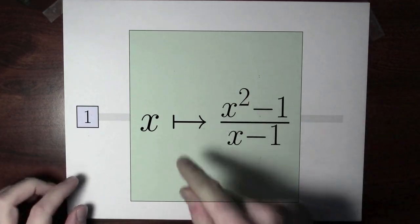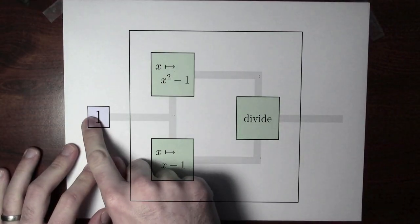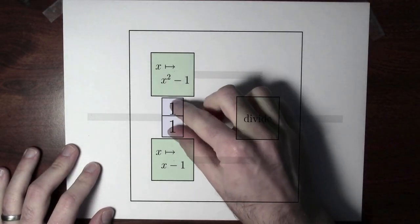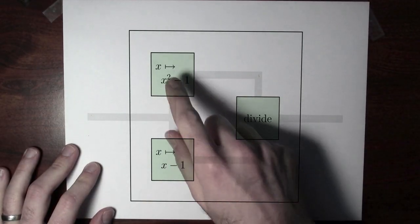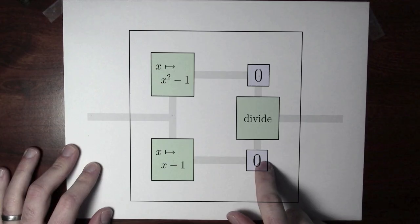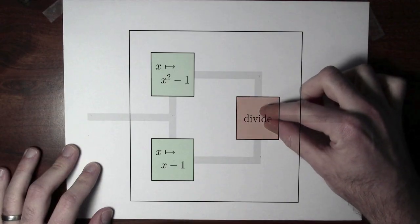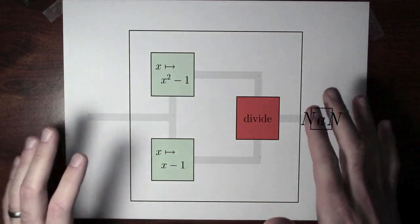I evaluated the function at 3, but who cares? Let's try to evaluate the function at 1 instead. What happens when we plug in the number 1 into this function? I'm going to open up this function and evaluate the numerator and denominator separately. I take this 1 and split it up, plugging it into the numerator and denominator. The numerator gives 1 squared minus 1, which is 0. And the denominator gives 1 minus 1, which is also 0. Now I've got 0 and 0 going into the division — I'm dividing by 0, and I cannot proceed. This function is not defined at 1.